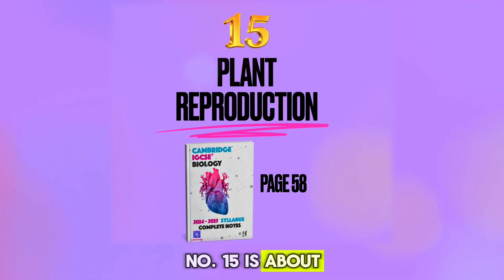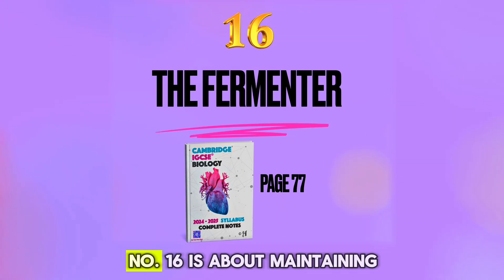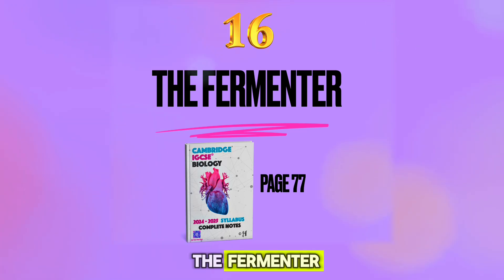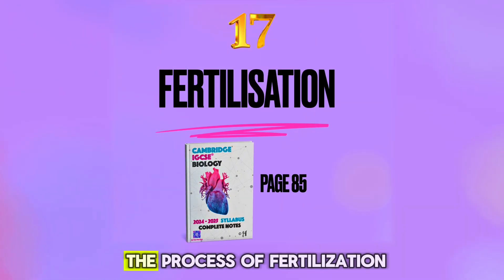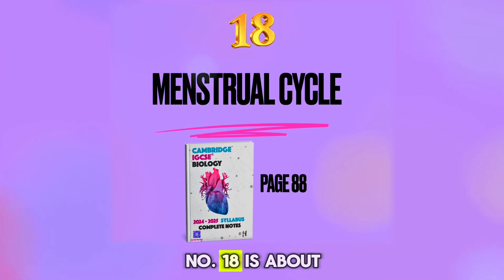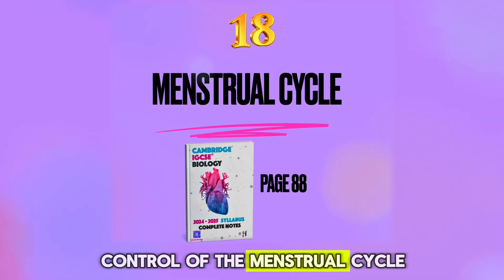Number 15 is about pollination and fertilization in plants. Number 16 is about maintaining optimum growth conditions in the fermenter. Number 17 is about the process of fertilization in humans.